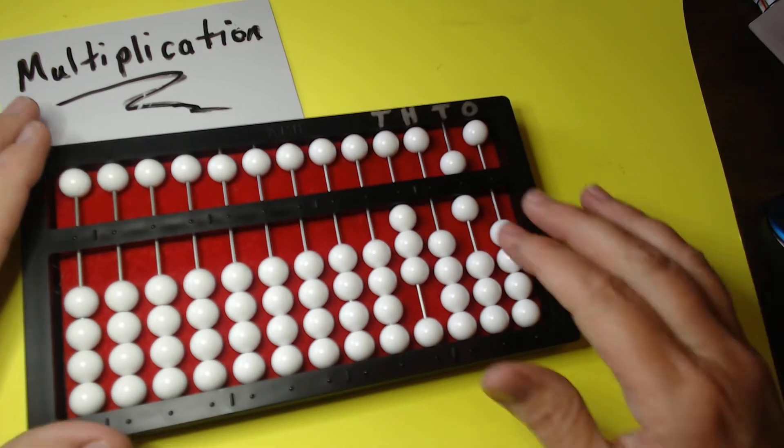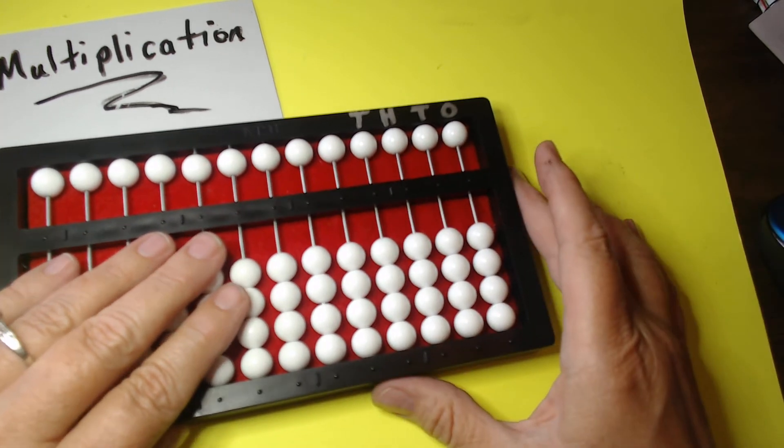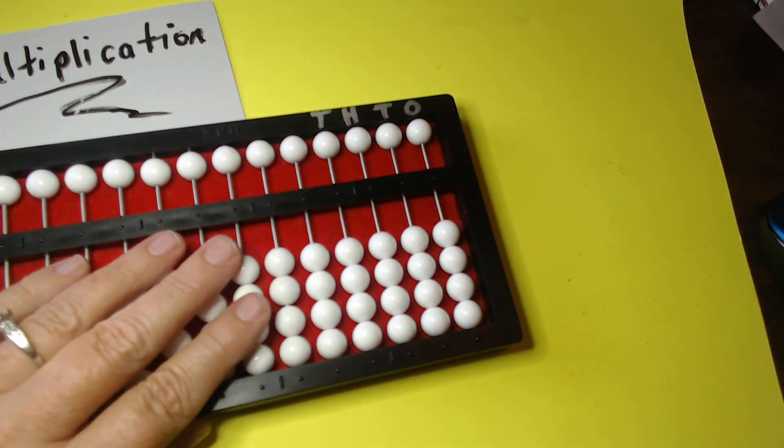So we will make the assumption that the kids already know their multiplication facts. Seven times three, eight times four, nine times six and that good stuff.